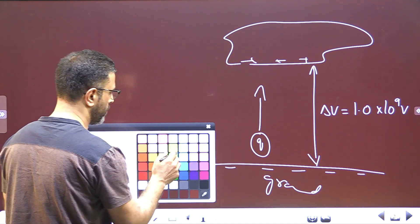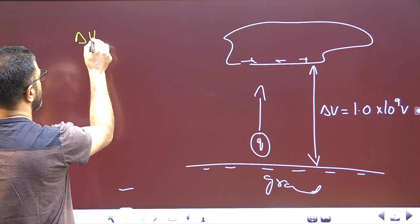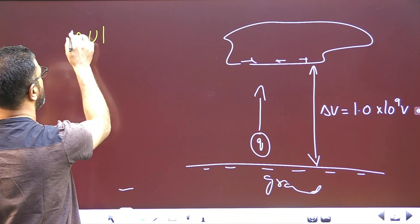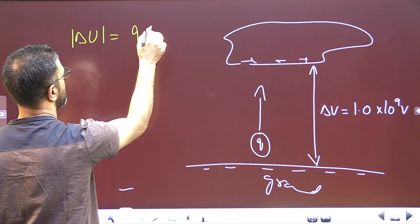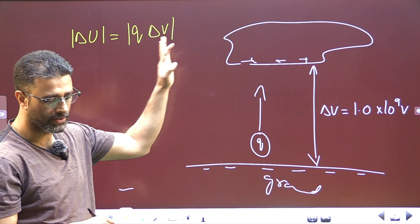So, let us first find out the energy, energy change. Change in energy, delta U modulus is Q times delta V, charge times the potential difference.